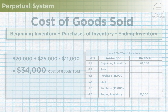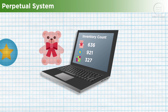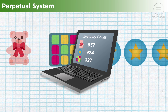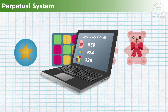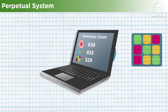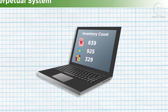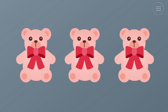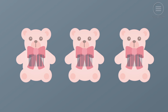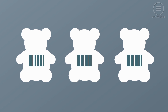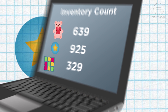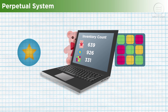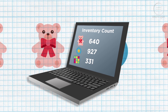Now let's examine cost of goods sold using the perpetual inventory system. In a perpetual system, all inventory additions and subtractions are immediately accounted for and can be measured at any time without a physical inventory count. This is because each inventory item is electronically tracked, usually with a barcode, so there's no need to wait a day, a week, or more between updates.